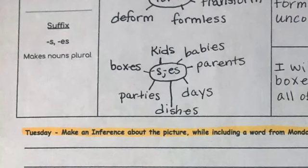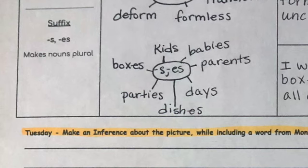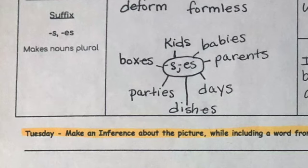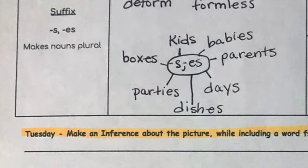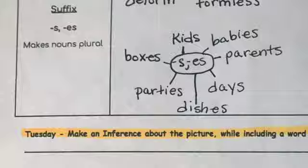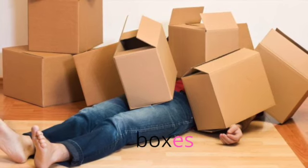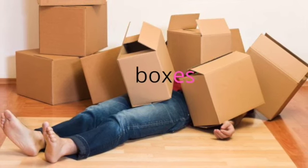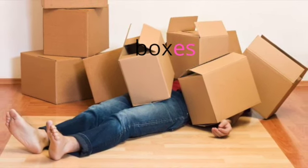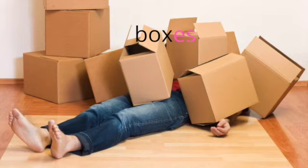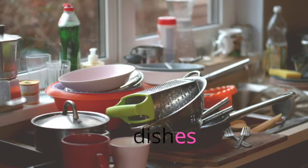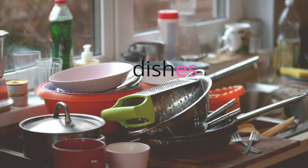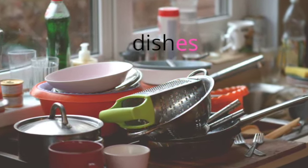Now on to the suffixes. Pay attention to the three sounds that this suffix can have — it can sound like s, z, and ez. For example, boxes sounds like ez. Because box ends with an x, we're going to use the es suffix. Dishes also sounds like ez at the end. Because dish ends with sh, we add an es.